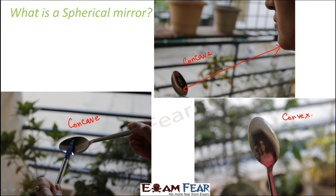So basically, in a concave mirror the type of image formed varies with the distance of the object from the mirror. With different types of spherical mirrors you get different types of images, and even with the same type of spherical mirror you get different types of images based on the location or distance of the object from the mirror. There are many factors which decide which type of image will be formed.